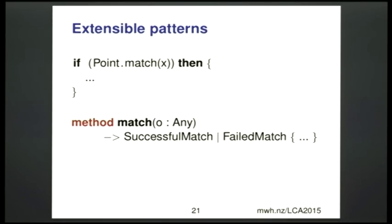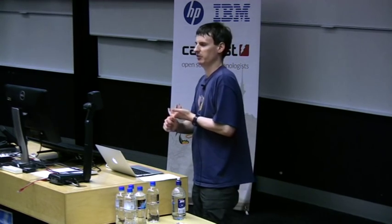You can define your own patterns, all built around the match method — it takes an object and returns either a successful match with what was matched, or a failed match. You can also use patterns in a boolean context: if point doesn't match x then do something. That lets you use these features without necessarily introducing the concept of pattern matching — it's simply a way of testing things. The ACM and IEEE curriculum mandates that students be introduced to both functional inductive programming and object-oriented programming, so we want to allow both within our language.